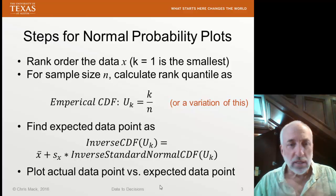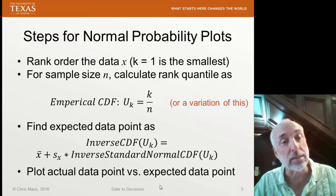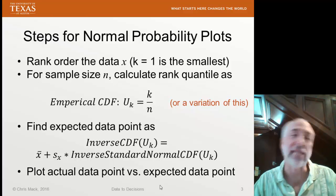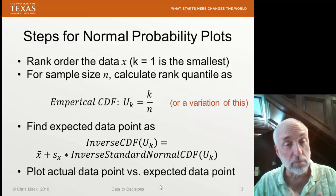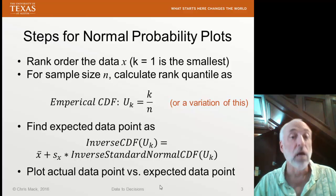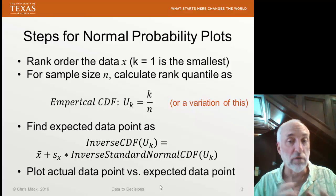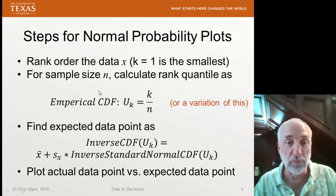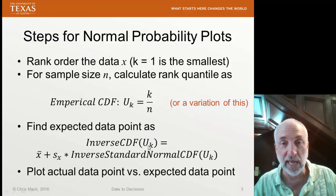Given this empirical CDF, I will calculate an expected data point value given an assumed probability distribution function. How do I do that? I take the inverse of this empirical CDF value. I take the inverse CDF of whatever Uk I calculated. Remember, k is the rank ordered number of that data point.